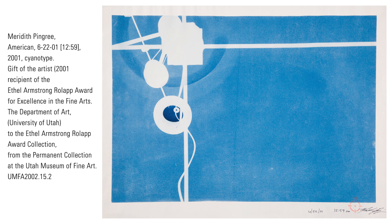Value is how light or dark a color is. Value is directly connected to light. We see things because light reflects off of objects, defining them for our eyes. Look around you. Can you find something that has bright light on it? Can you find a shadow? This contrast between light and dark and the tones in between is value.